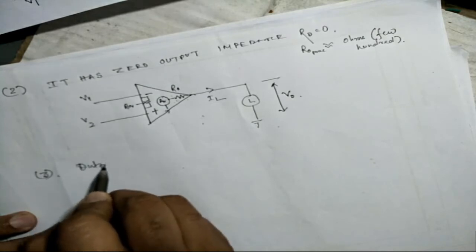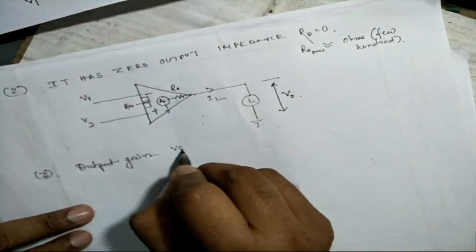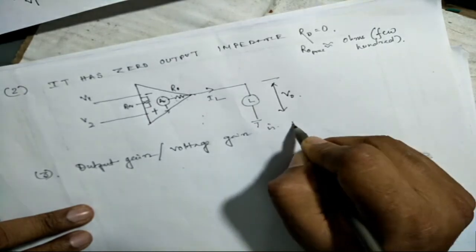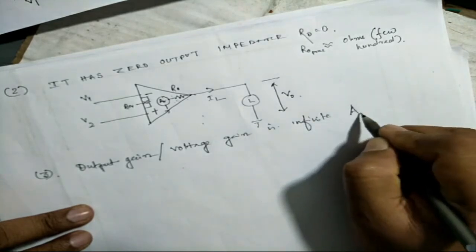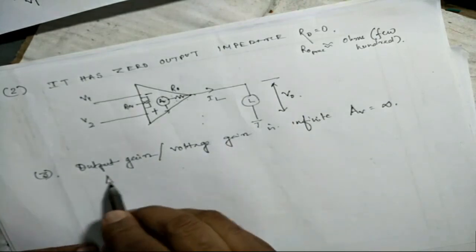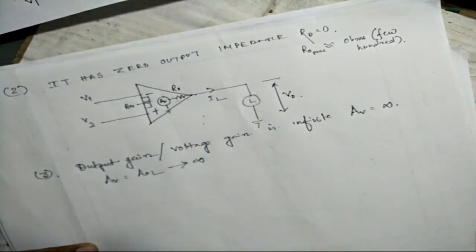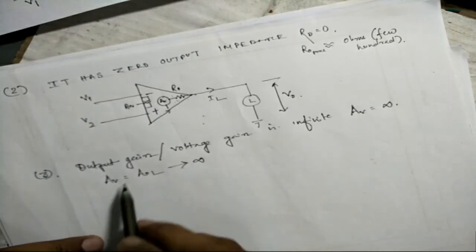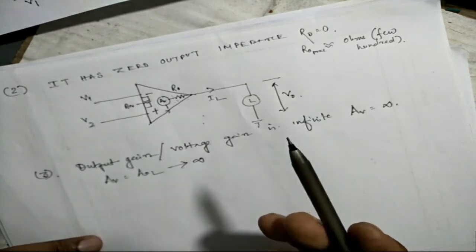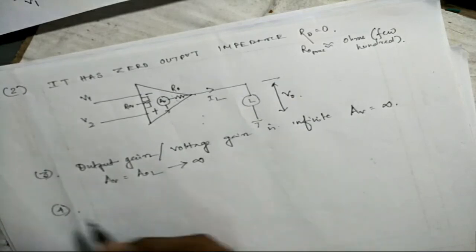Now the third one, the voltage gain is infinite. In case of operational amplifiers, Av is actually written as Aol, which is nothing but infinite. Here Aol means it is open loop gain and it is infinite in case of ideal operational amplifier, and it's very, very high for a practical operational amplifier.